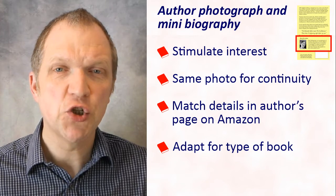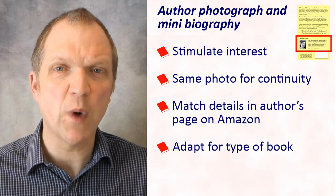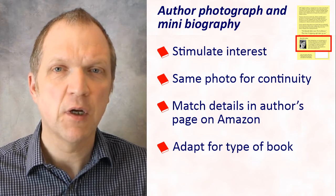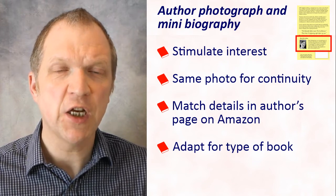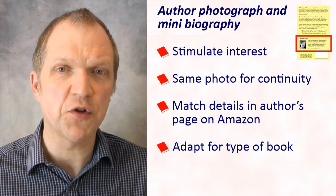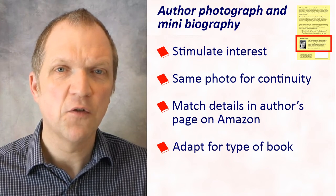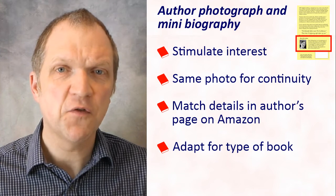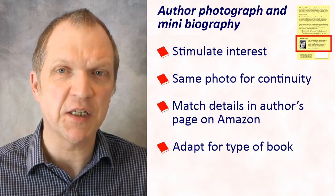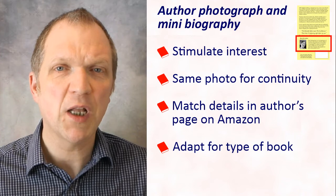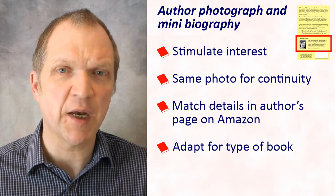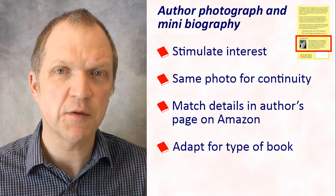The mini-biography should be based on the biography on your website's publishing page — for me, that's my author's page on Amazon. The contents of the mini-biography should be adapted for the type of book that you're publishing. For example, the mini-biography on my novels focuses on how I develop the characters in my stories, while the mini-biography for my non-fiction books focuses on other aspects of my knowledge or experience.